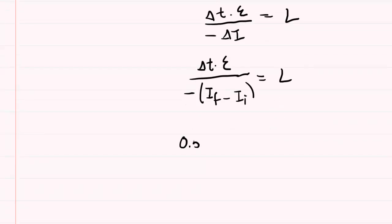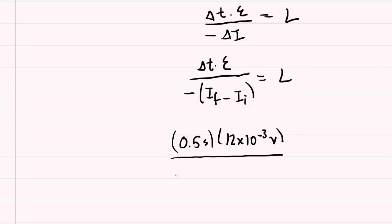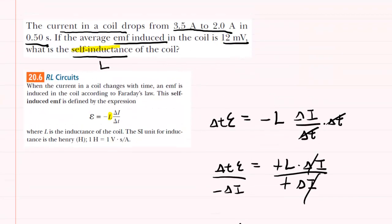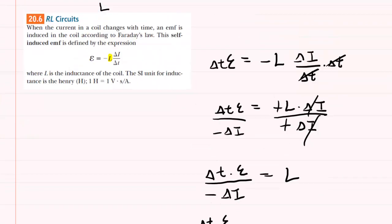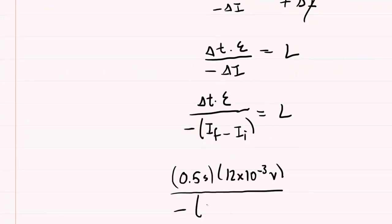Now we plug in the known values. The delta T, the time interval, was given as half of a second. The self-induced EMF was 12 millivolts — notice you have to take 12 and multiply it by 10 to the minus 3 to get it into volts. Divided by negative parentheses: the final current was 2 amps, and the initial was 3.5 amps.